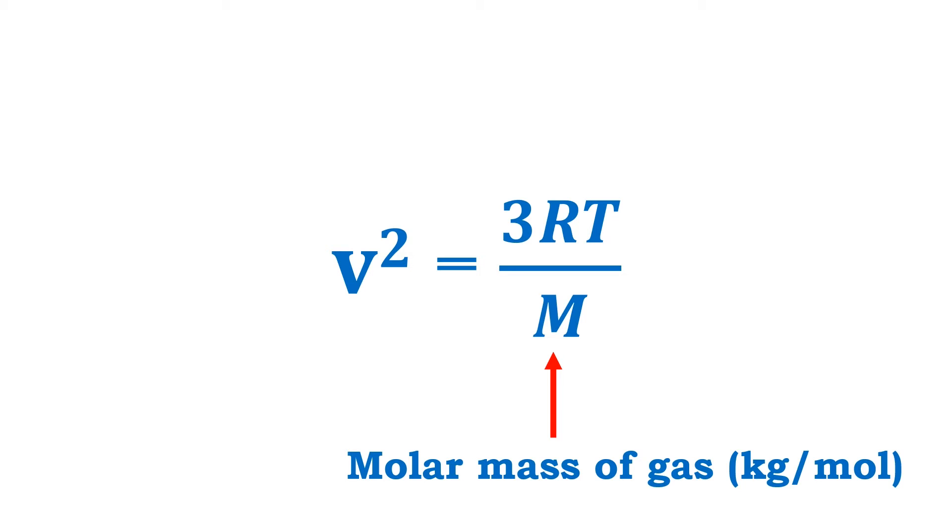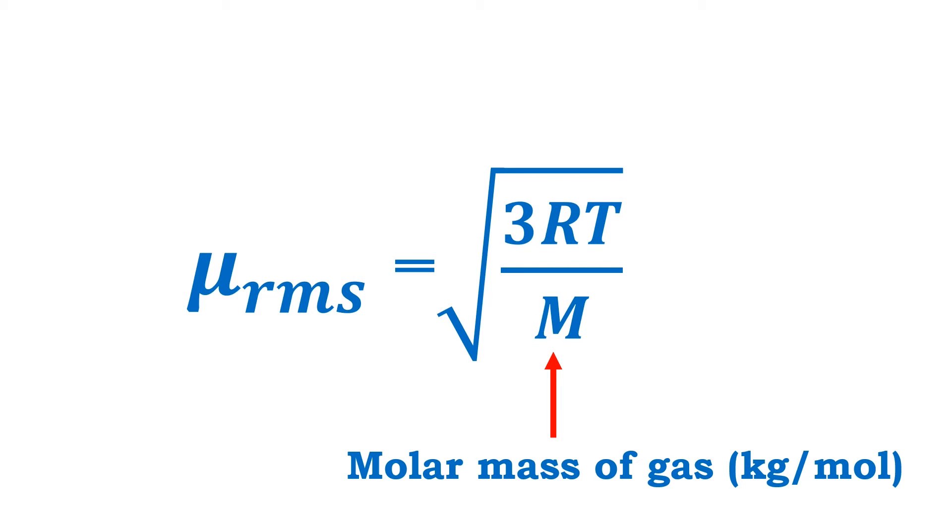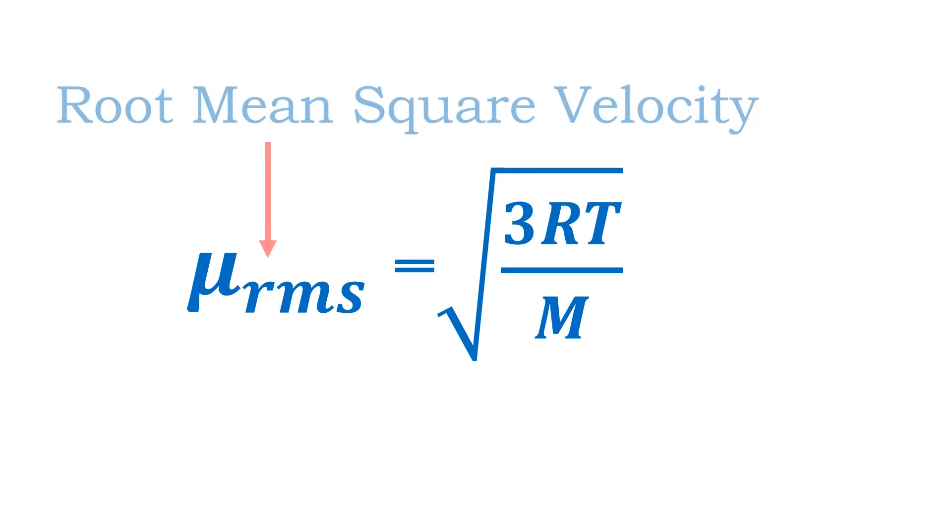Finally, I'll take the square root of both sides and get the square root of the velocity squared. We conclude with the equation for what's called the root mean square velocity. Note that the symbol for velocity in thermodynamics is the Greek letter mu, and RMS stands for root mean square velocity.